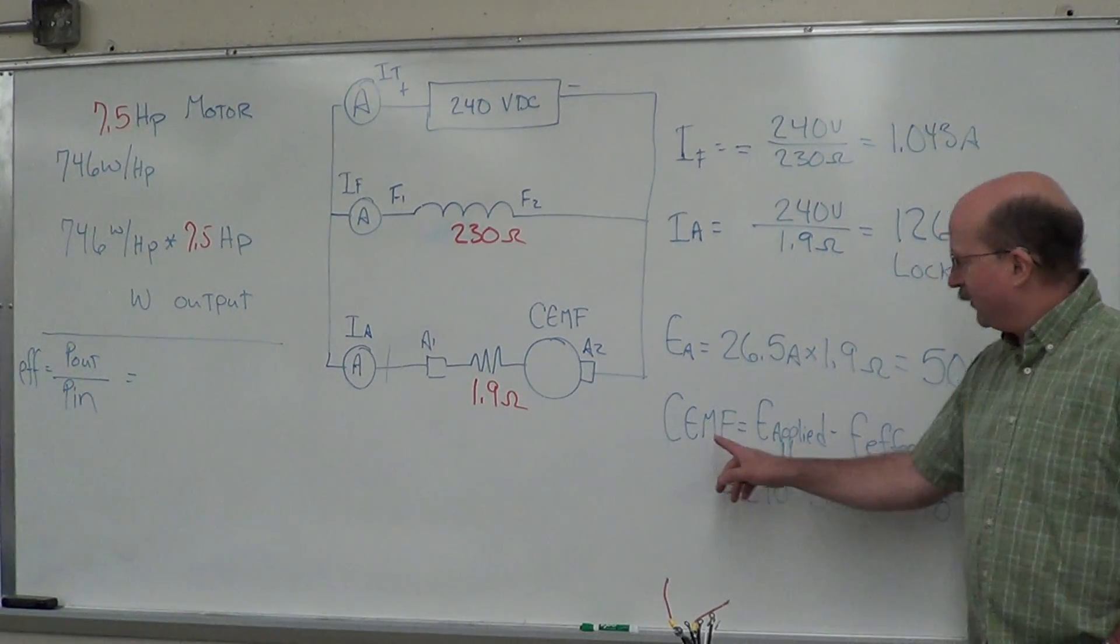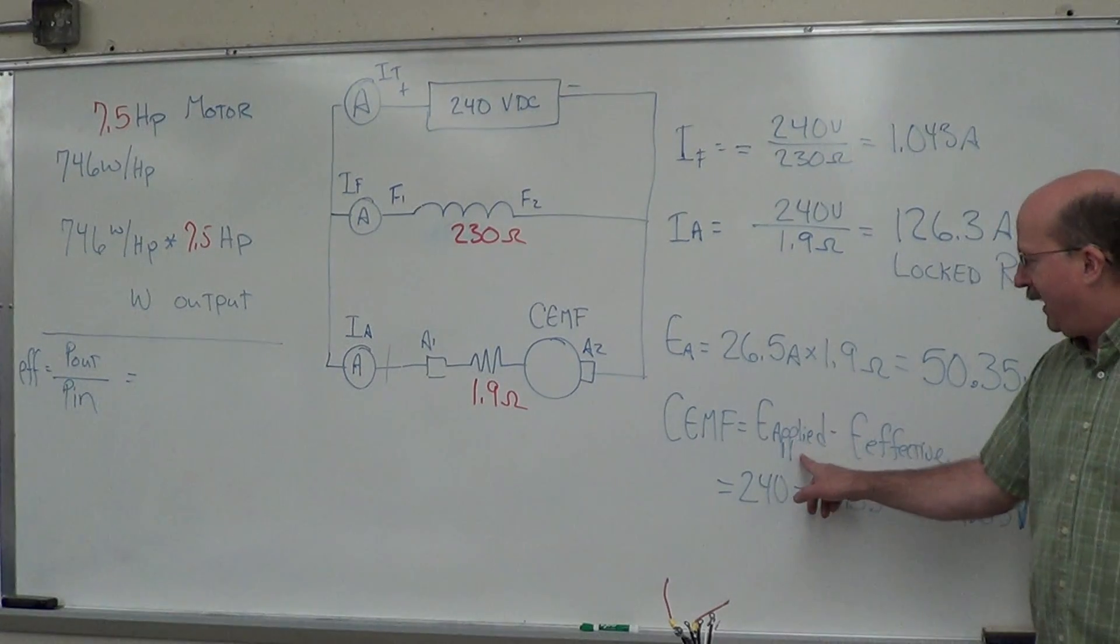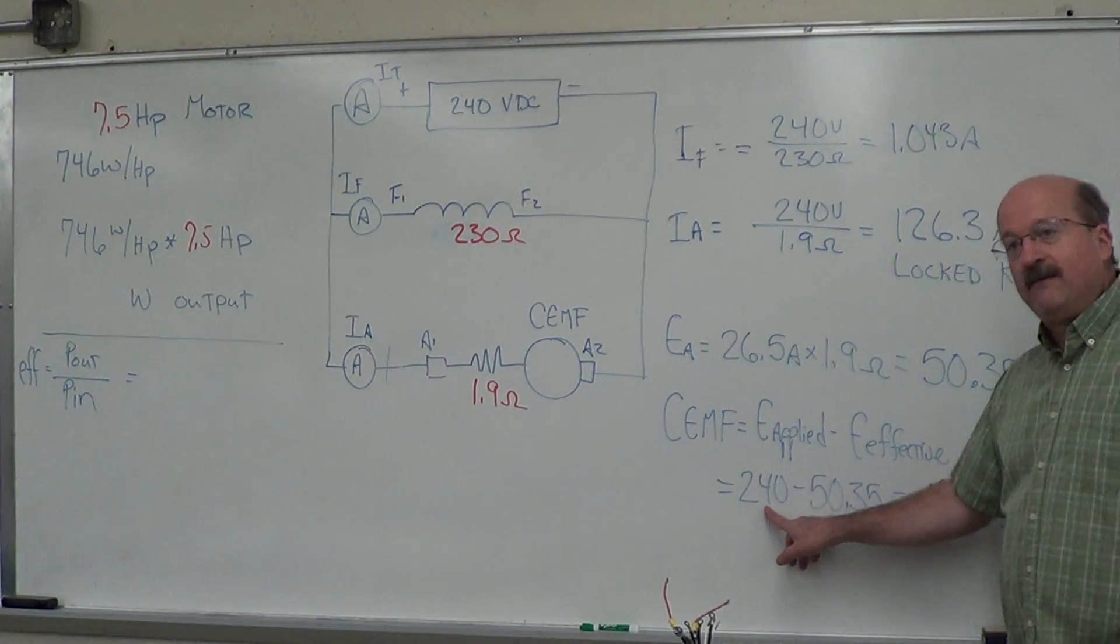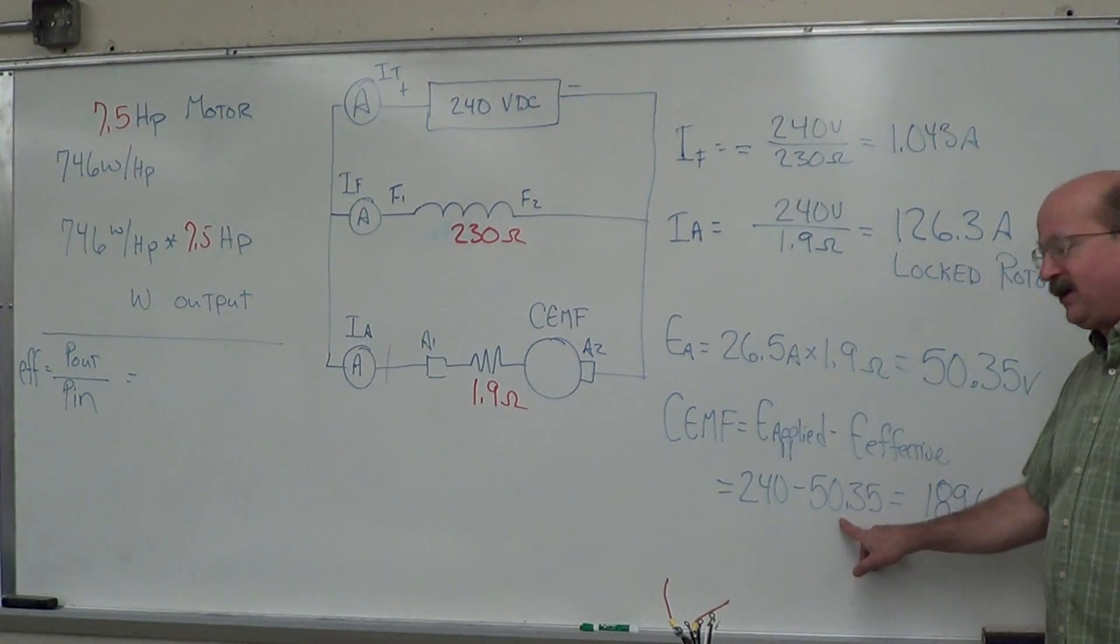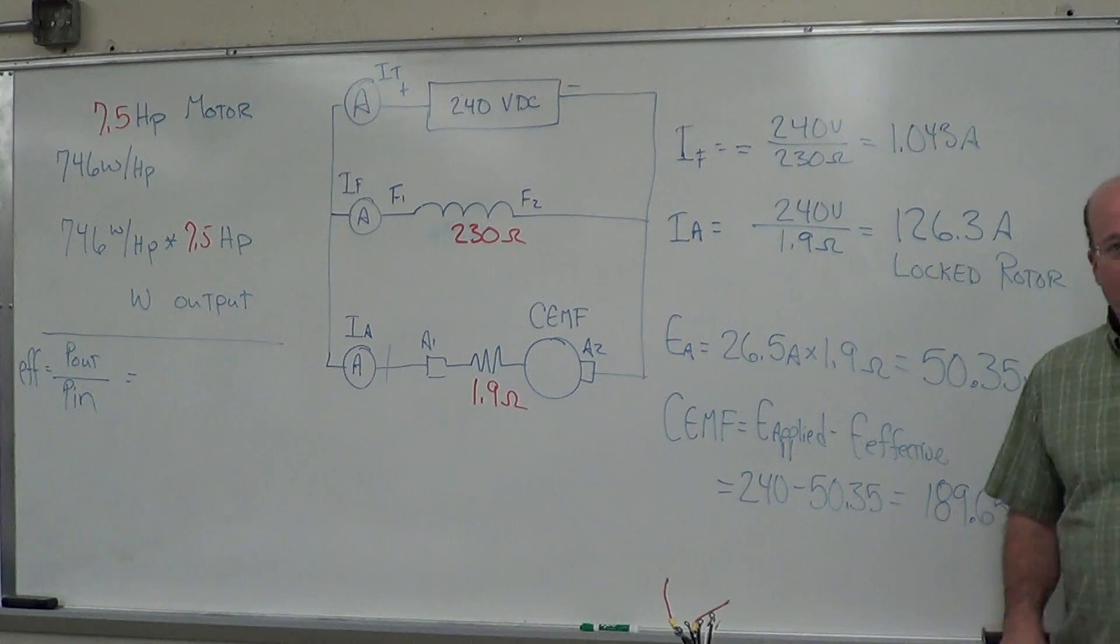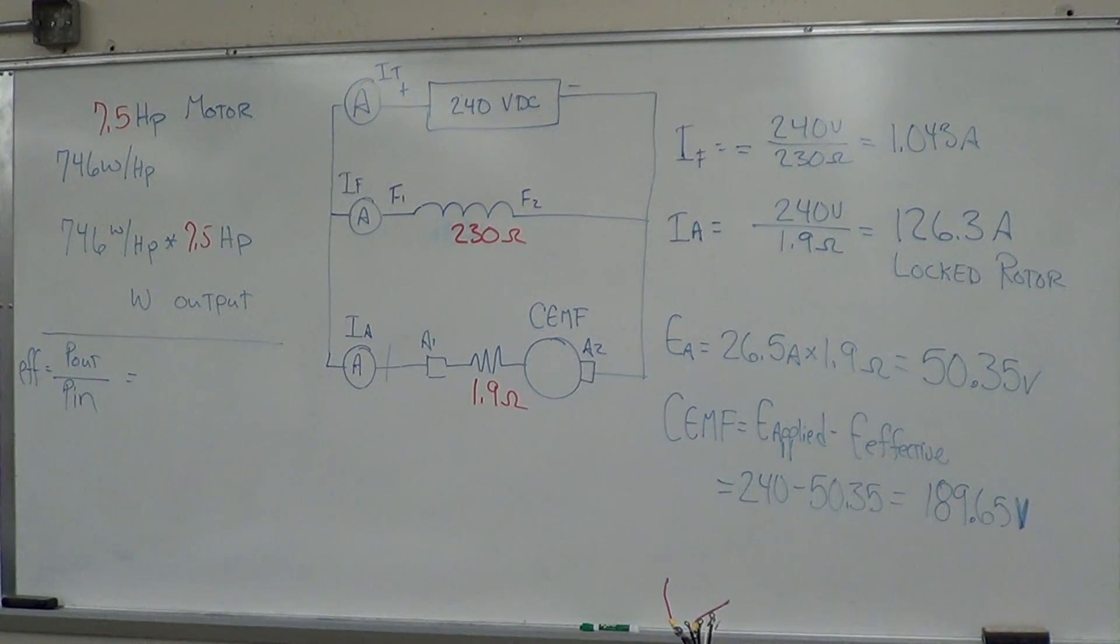That's got to mean there's something else being generated in here to prevent that full 240 volt drop across there. That's our counter-EMF. So if counter-EMF is equal to the applied voltage minus our effective, which is 240 volts minus our 50.35, gets us 189.65 volts, 189.7 volts there.